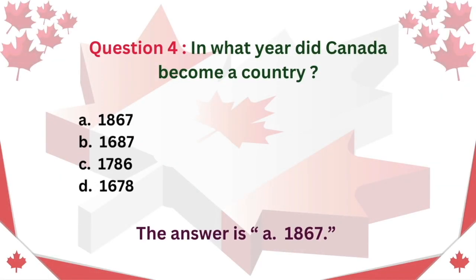Question 4. In what year did Canada become a country? A. 1867 B. 1687 C. 1786 D. 1678. The answer is A. 1867.